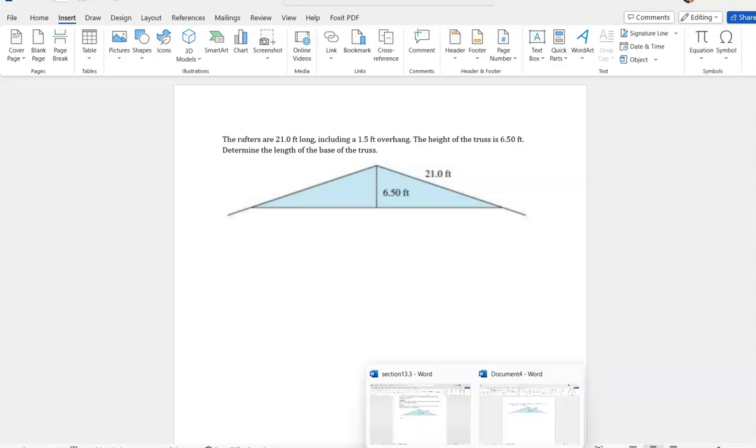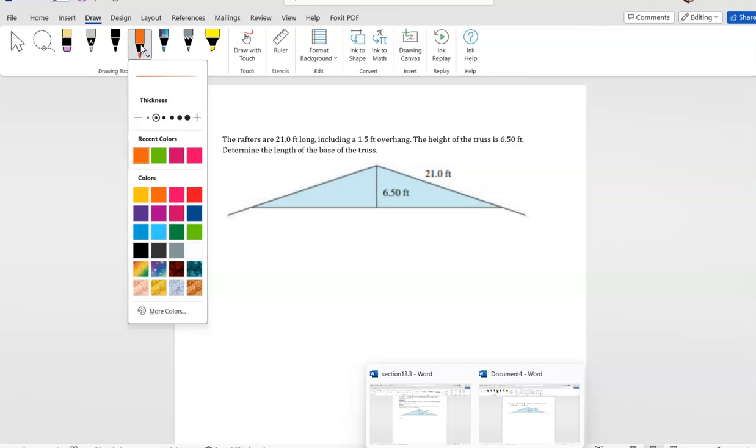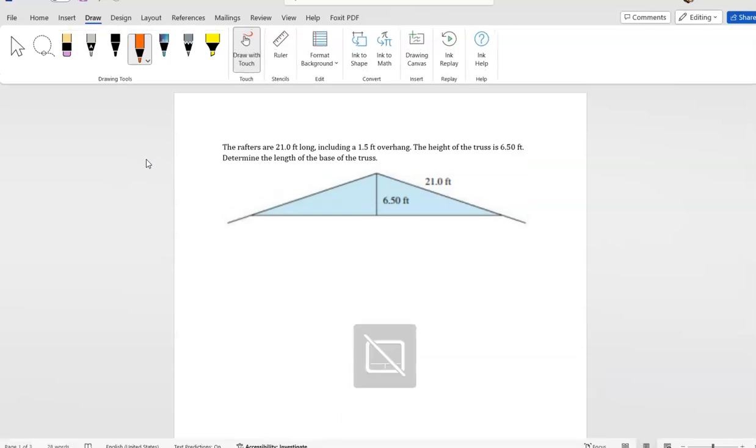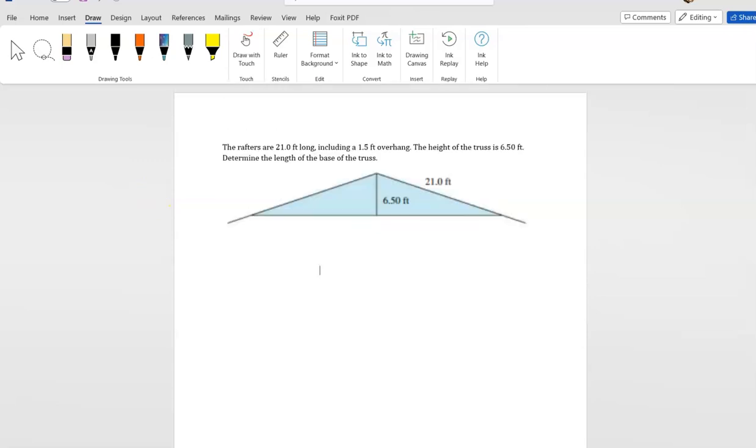So we want to know the bottom of this triangle. But as we look at this, first thing we've got to realize is they told us that the rafters are 21 feet, but they've got a one and a half foot overhang. So first thing I'm gonna do to find the top of my triangle up here is this is really 21 and a half minus one and a half, so this is 19 and a half.